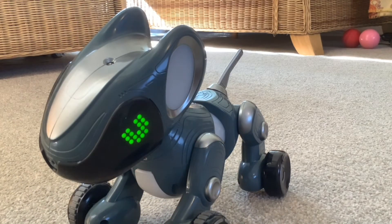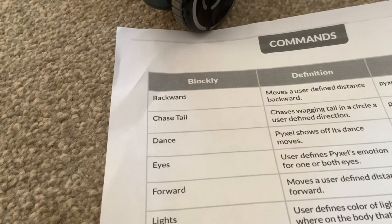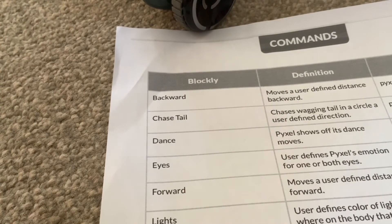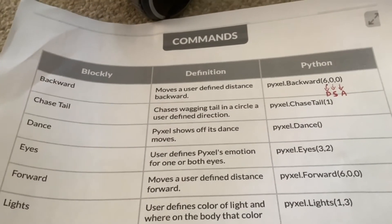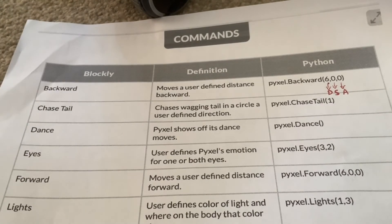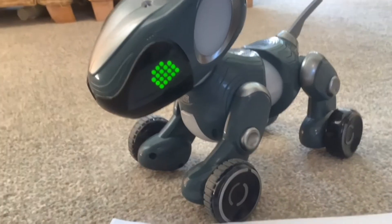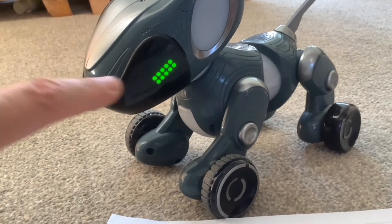Because there's no number I suppose it always means it's the same dance. The next command is eyes — Unity defines Pixel's emotion for one or both eyes. The Python code is 'pixel.eyes(3, 2)' — that's on Code Activator button four.